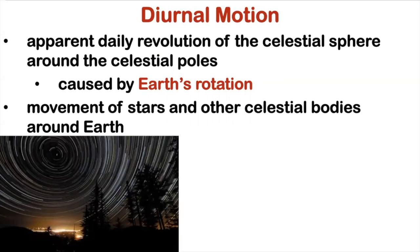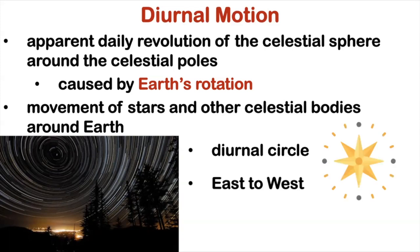Now, the path that celestial bodies take to complete diurnal motion is called the diurnal circle. So when observing the night sky, you'll notice that the stars appear to move from east to west with respect to Polaris, or the north star. Also, the ones near the pole have smaller circles.